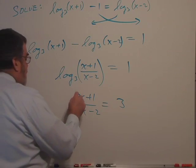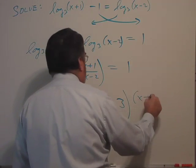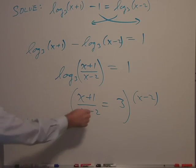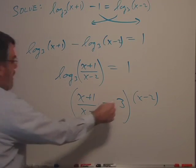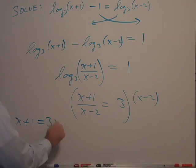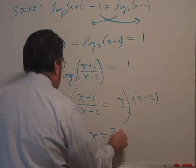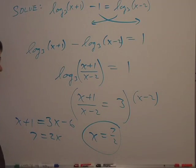If we now multiply this equation by (x-2), we'll get (x+1) on the left, because this cancels on the right. Multiply the 3 through there, we have 3x minus 6. And 7 equals 2x. x would equal 7 and a half. So there's our answer.